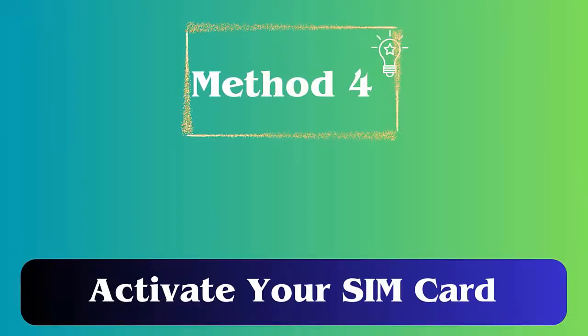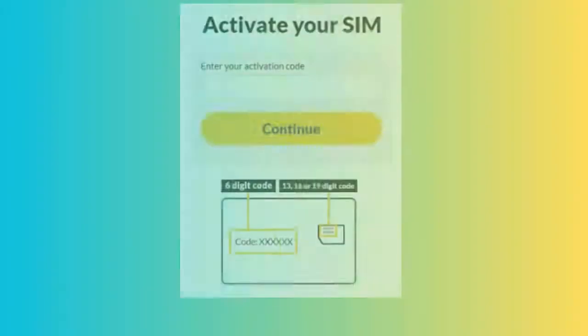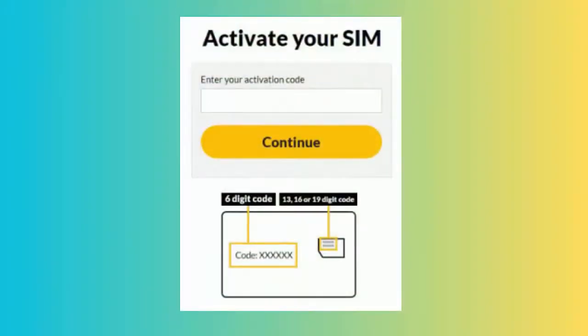Method four: activate your SIM card. When you insert a new SIM card on your phone, it may not get activated instantly and you can experience the error. So you should activate the SIM by calling an automated number or sending an SMS to carrier support.